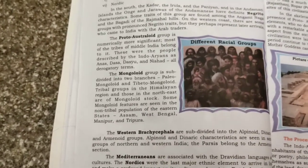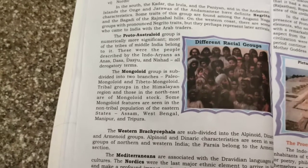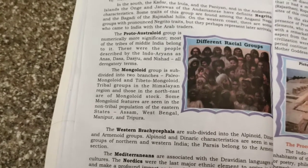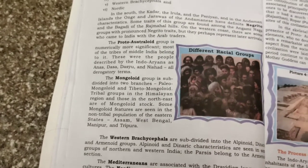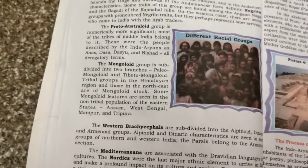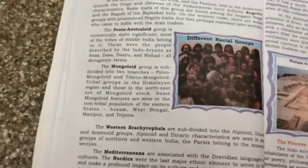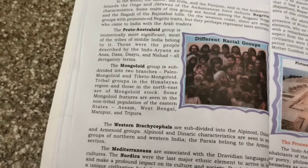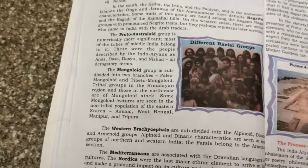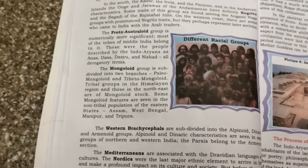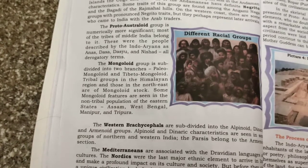The Mongoloid group is subdivided into two branches: Paleo-Mongoloid and Tibeto-Mongoloid. Tribal groups in the Himalayan region and those in the Northeast — today's Mizoram, Assam, Sikkim — are of Mongoloid stock. Some Mongoloid features are also seen in the non-tribal population of eastern states: Assam, West Bengal, Manipur and Tripura.